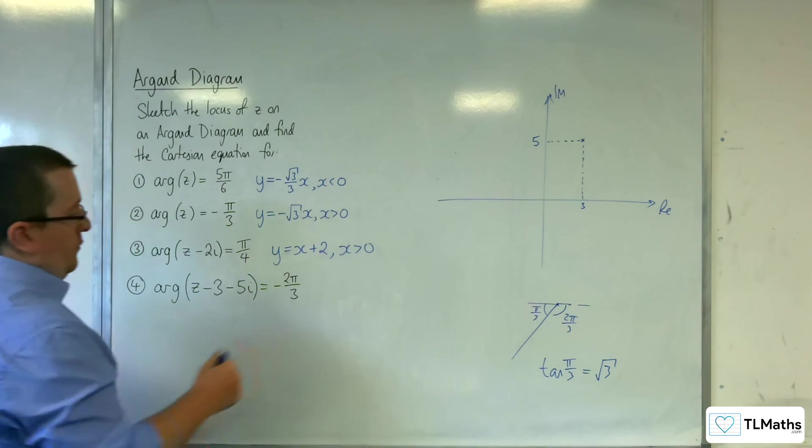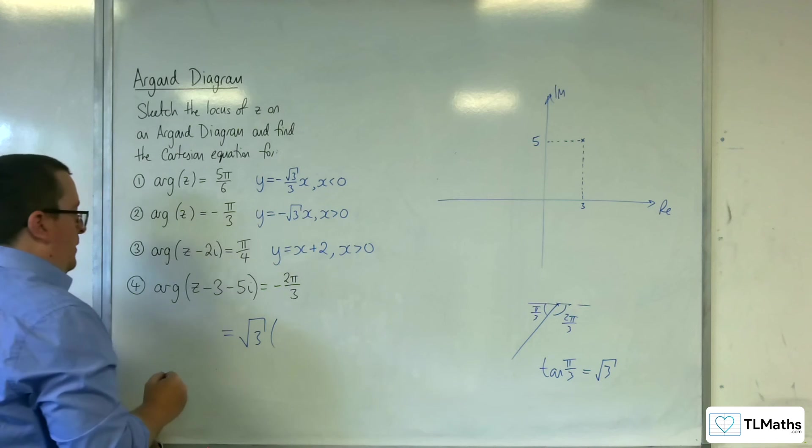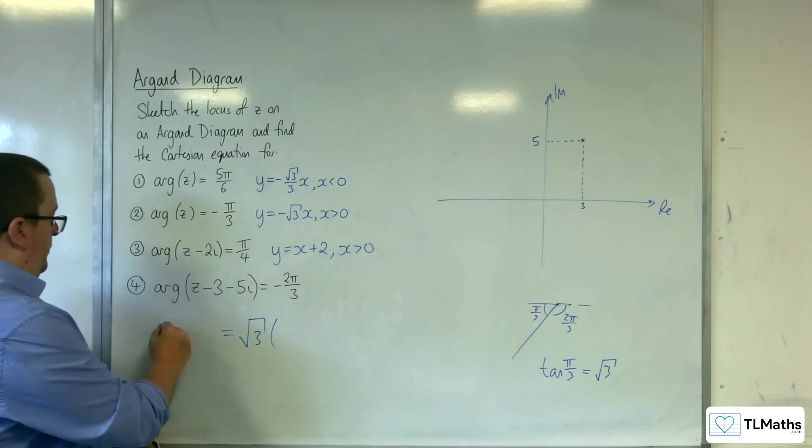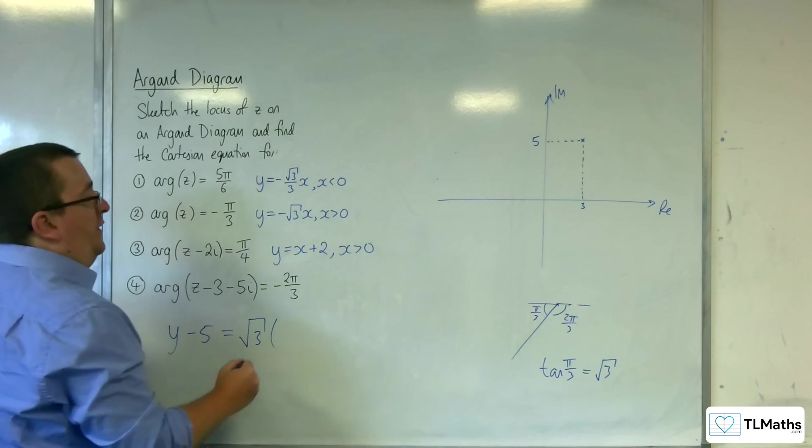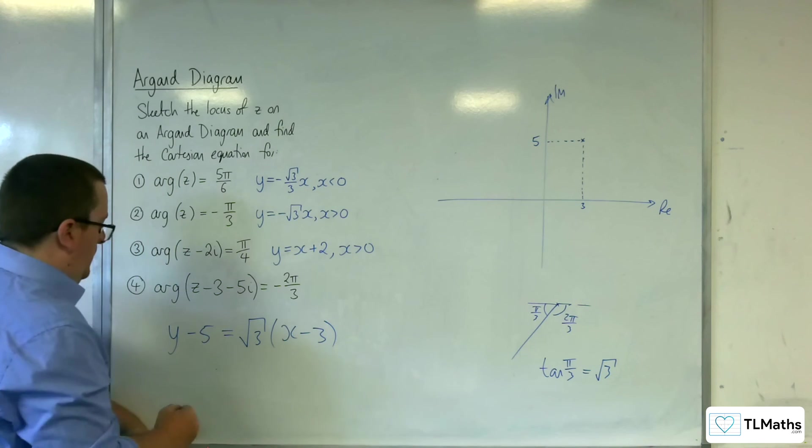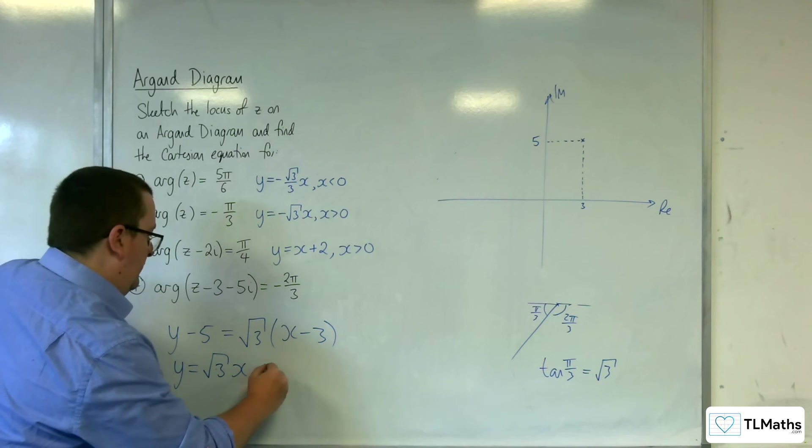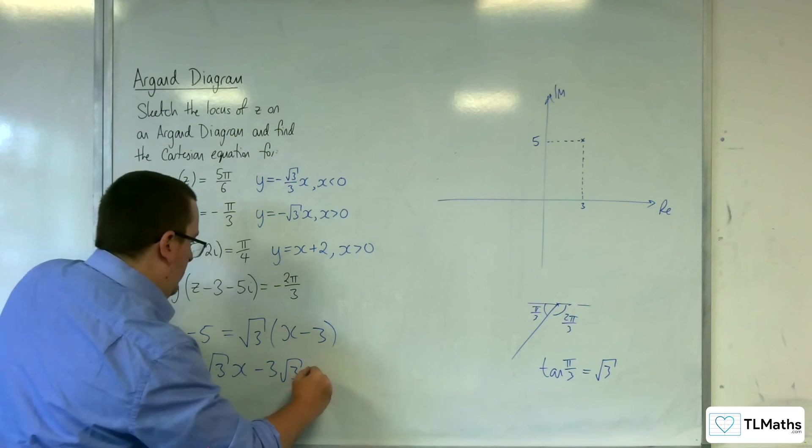Now, if √3 is the gradient, then I'm going through 3, 5. So, y minus 5 is equal to √3, x, take away 3. So, y is equal to √3 x, take away 3√3, plus 5.